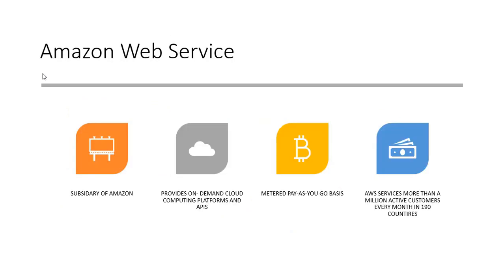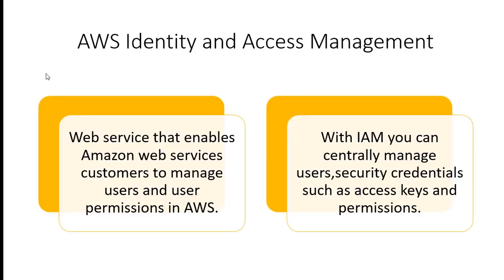Amazon Web Services is a subsidiary of Amazon that provides on-demand cloud computing platforms and APIs to individuals, companies and governments on a metered pay-as-you-go basis. AWS IAM is a web service that enables Amazon Web Services customers to manage users and user permissions in AWS. With IAM, you can centrally manage users' security credentials such as access keys and permissions, and control which AWS resources users can access.